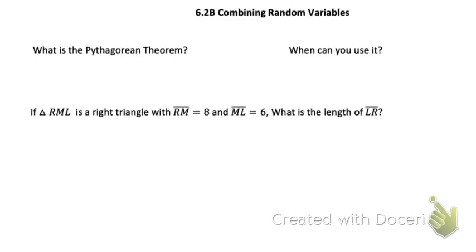Yesterday we talked about transforming a random variable — taking a distribution and changing something about it. Today, what we're going to talk about is: what if we have two different distributions and we want to combine them into one? How do we handle that?